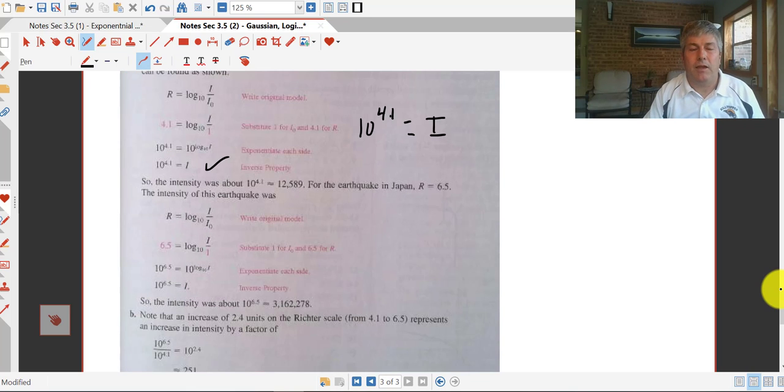Then for the Japanese earthquake, we do the same process with 6.5 in. And again, we end up with logarithmic form. So we can convert that to exponential form, and we get 10 to the 6.5 equals i. And that works out to 3.1 million.